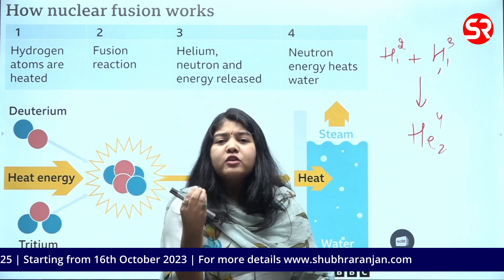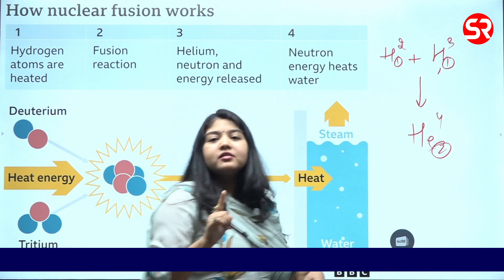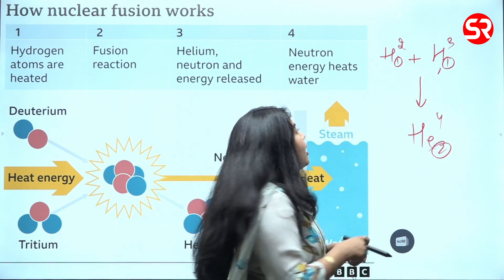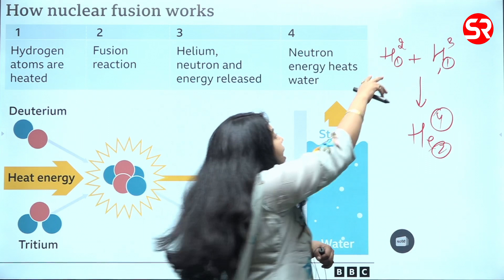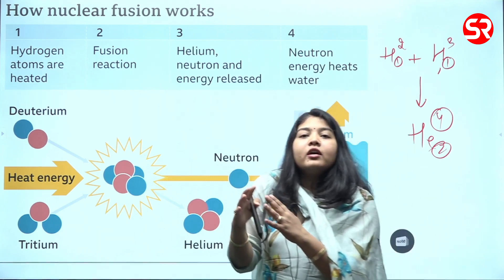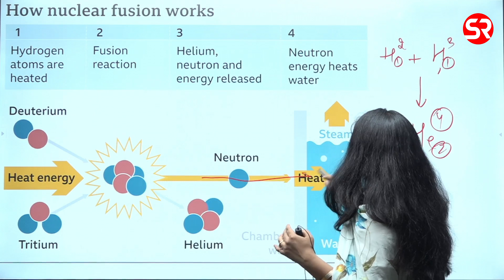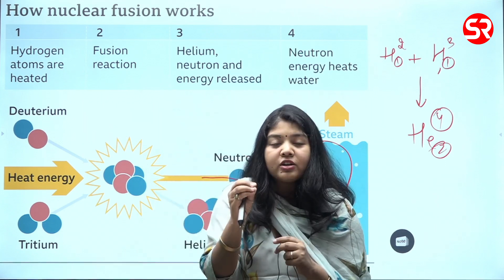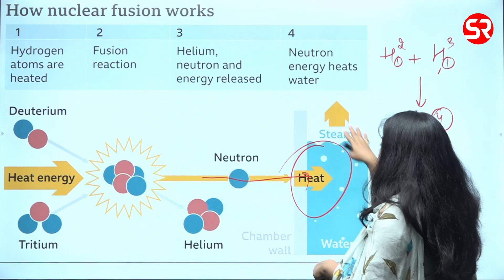The question is: what is the main source of this energy? The number of protons always remains the same — here 1 plus 1 makes 2. But when two small elements combine to make a larger element, the number of neutrons decreases. Ideally it should be 5 but here the number of neutrons is 4, so that one neutron which is lost is responsible for the energy or heat production. The raw material used is hydrogen — the two isotopes deuterium and tritium — and the loss of a neutron results in the production of heat.